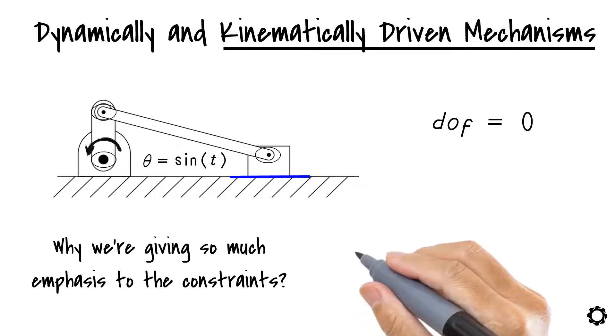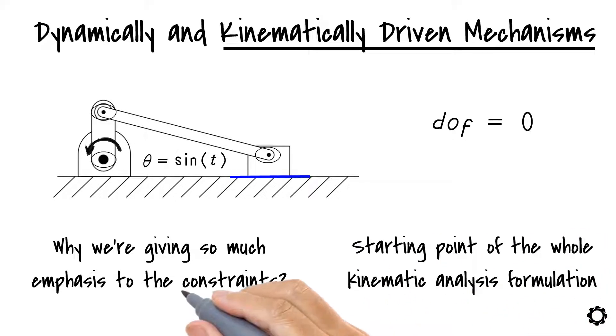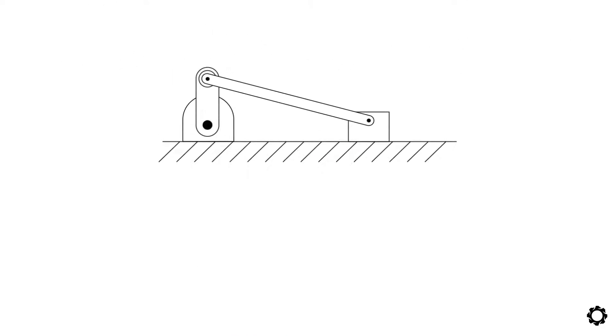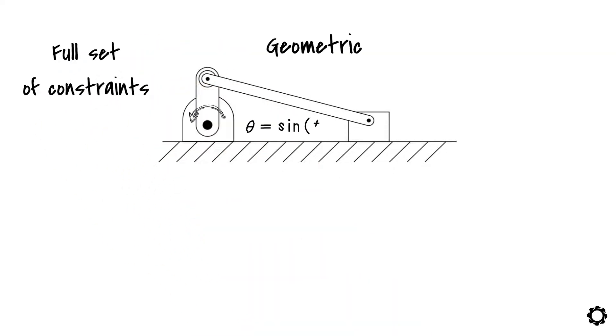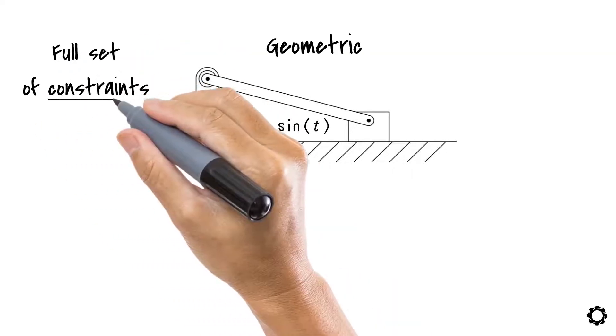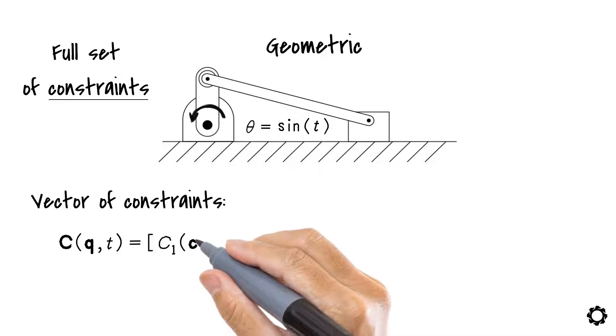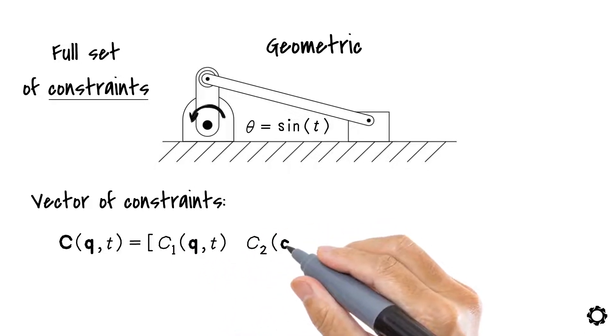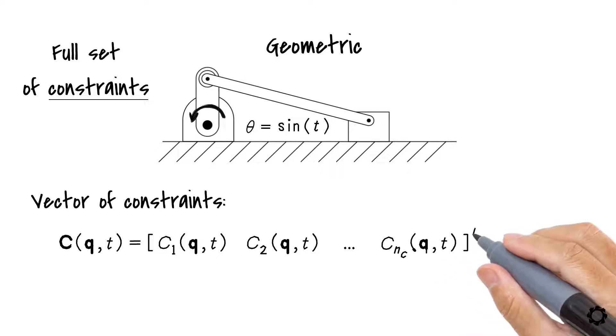This is because the starting point of the whole kinematic analysis formulation is based on the system's constraints. Let's say we have a system, any kinematically driven system, and we already know the full set of constraints, geometric and time dependent. Then we collect these constraints in a vector of constraints like C(q,t) equals [c1(q,t), c2(q,t), and so on until cnc(q,t)]^T equals zero.